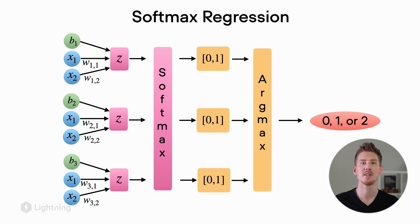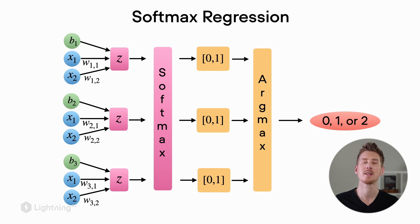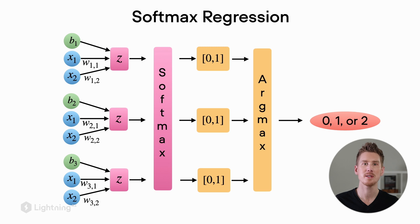Some people refer to this also as logistic regression, which is correct. But to distinguish between binary logistic regression and multi-class logistic regression, we will refer to the multi-class version as softmax regression. Softmax regression is very similar to logistic regression, except we have multiple sets of weights, the softmax activation instead of sigmoid, and argmax instead of the threshold. The softmax activation function also returns values between zero and one, just like the sigmoid activation function — a detail we will cover later on.